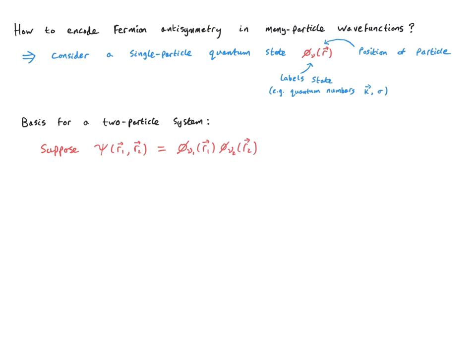How do we now construct the basis for a two-particle system? One might imagine that a good many-particle basis can be built from product states of our single-particle states. I could write that a wave function for a two-particle system, psi, labelled by the particle positions r1 and r2, can be constructed as the product of single particle orbitals phi_nu1 for a particle at position r1 and phi_nu2 for the second orbital with a particle at position r2. However, it's obvious that this two-particle wave function does not have the correct antisymmetry property for exchange of particles 1 and 2.